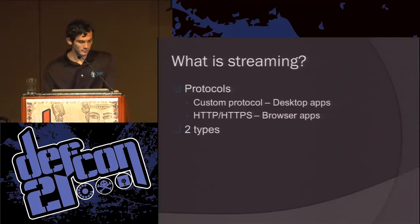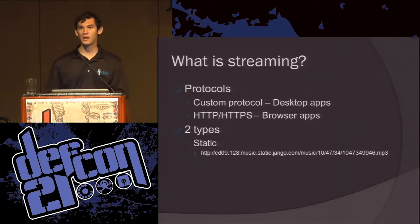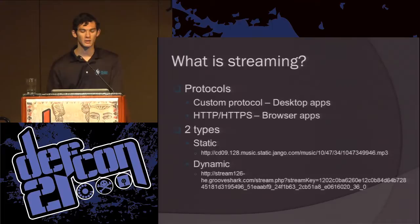There are two different types of streaming. Static streaming is where you have one URL per song — you reference it by a file name and you need to know the directory. Dynamic streaming is where you have one page and depending on what parameters you send, you get back a different file — like a stream.php page where different keys return different files. It's one-to-one versus one-to-many, and this is important to keep track of when doing analysis.